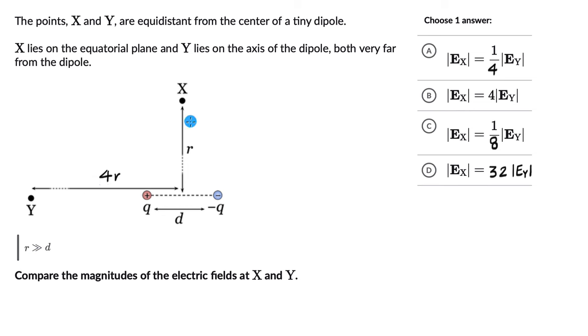We are given that distance r is much greater than d. We need to compare the magnitudes of the electric fields at X and Y, and we have four options to pick the right one.